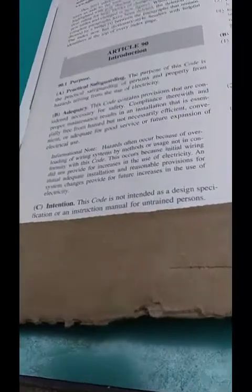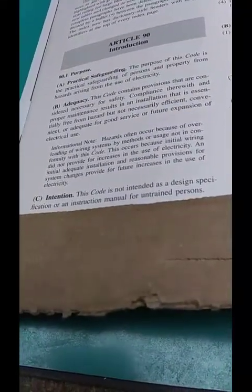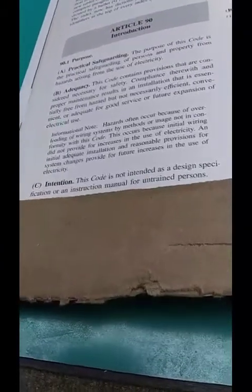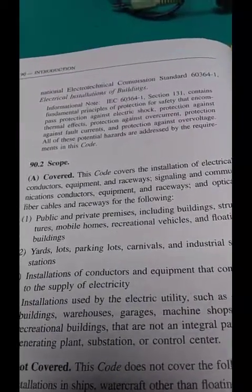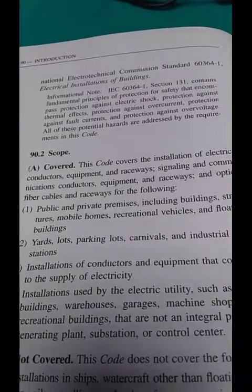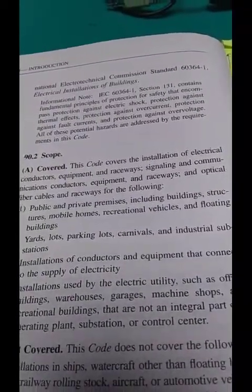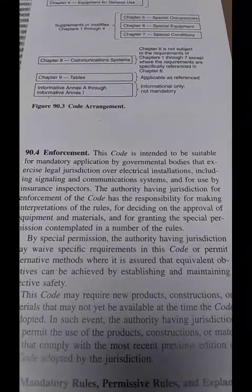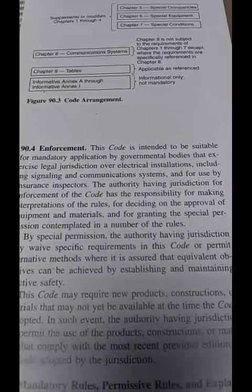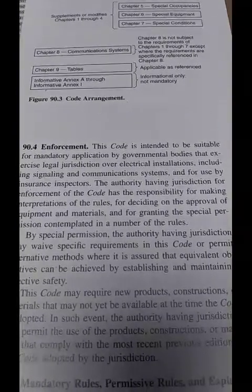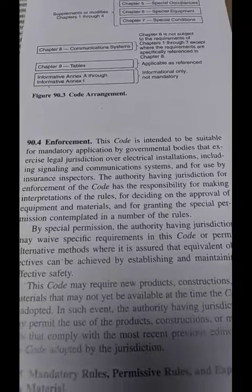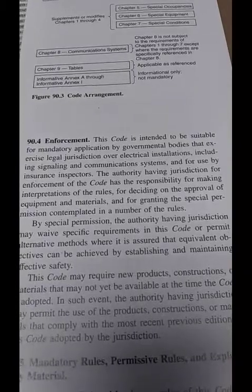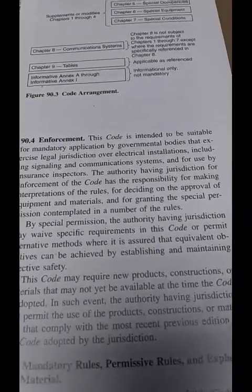Article 90. Intention. This code is not intended as a design specification or an instruction manual for untrained persons. Scope. Covered. Installation of electrical conductors, equipment, etc., public and private premises including buildings, structures, mobile homes, etc. Your house. Enforcement. Code intended to be suitable for mandatory application by governmental bodies that exercise legal jurisdiction over electrical installations.